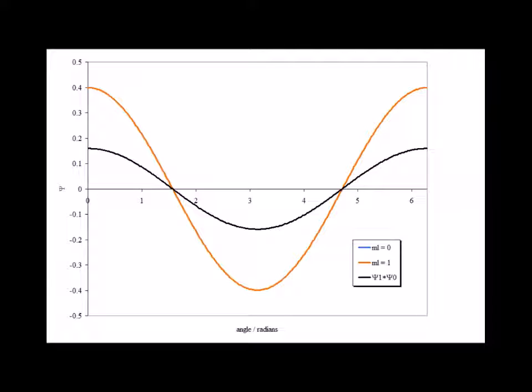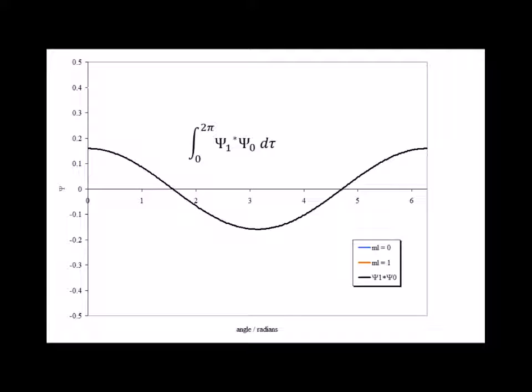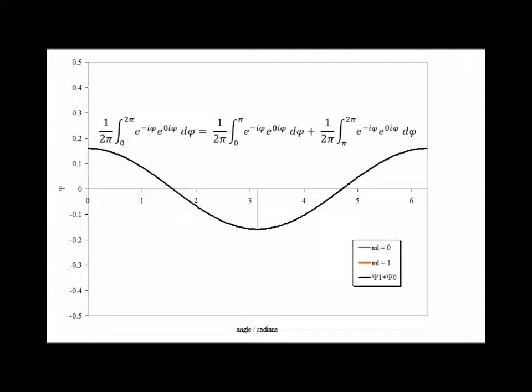For clarity, we first remove the curve for m sub l equals 0, then we remove the curve for m sub l equals 1. The line in black corresponds to the product psi 1 star psi 0, and the area under this curve corresponds to the value of the integral from 0 to 2 pi of psi 1 star psi 0 d tau. Note that, using the properties of integrals, the integral from 0 to 2 pi is equal to the integral from 0 to pi plus the integral from pi to 2 pi, and this separation is shown by the short vertical line in the middle of the graph.